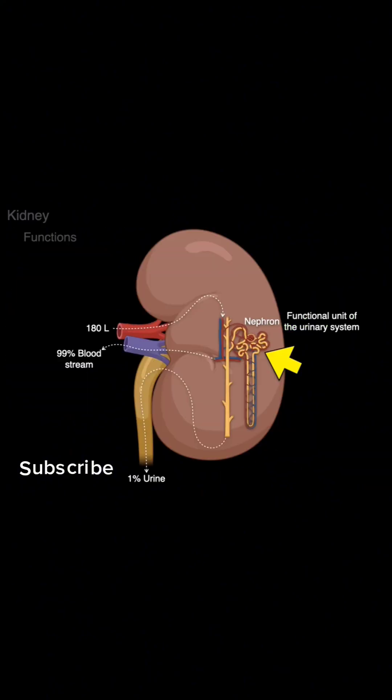Let's start by examining the external anatomy of the kidney. Each kidney is bean-shaped and about the size of a fist. They are located in the upper abdominal cavity, just below the ribcage, with one on each side of the spine.